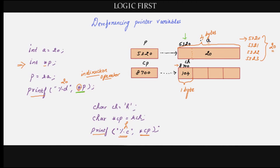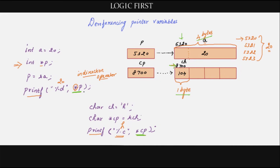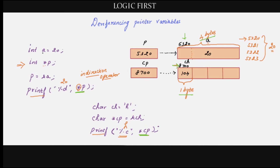When you give star p, it goes to the address and fetches data spanning four bytes. When you give star cp, it goes to the address and fetches data which is just one byte. Both are pointers — so how does it know how many bytes to fetch? It is because while declaring a pointer for an integer variable, you declare that pointer as integer; only then will it know how many bytes of data to fetch when you use the indirection operator. Similarly, a pointer declared as character knows to fetch just one byte.